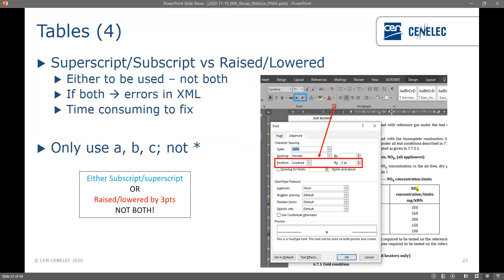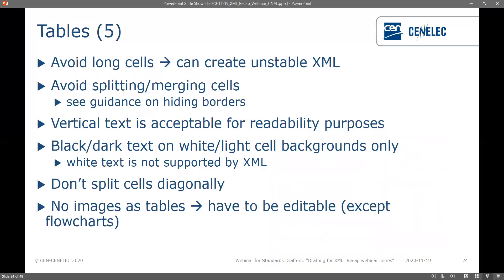For superscripts and subscripts for footnotes to tables — we get a lot of errors regarding this. Choose either superscript/subscript or raised/lowered, not both. There are two examples: the blue example uses superscript and subscript where you highlight the text and choose superscript or subscript; the red example uses raised or lowered text. Pick one or the other. Also, only use a, b, or c for footnotes — don't use asterisks or anything else, just stick to a, b, c.